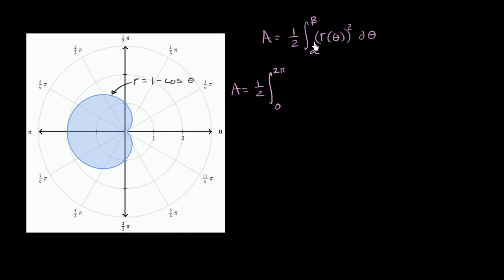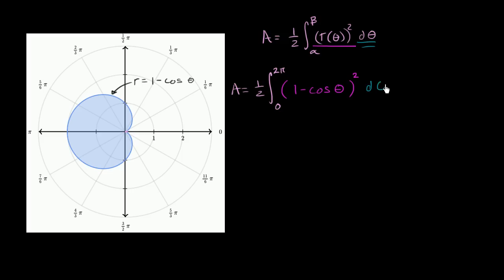Now what's r(θ)²? r(θ)² is just going to be (1 − cos θ)². And of course we have our dθ. Now we just have to evaluate this integral.